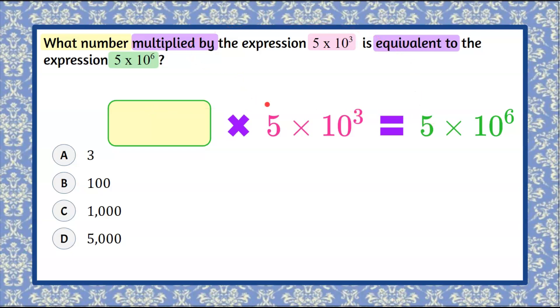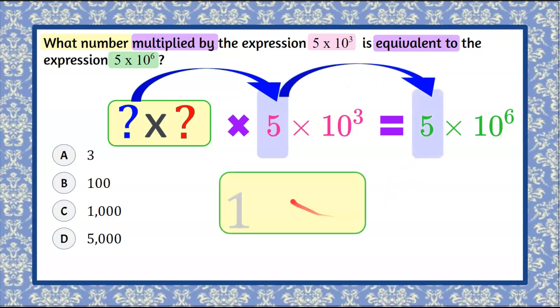Now when we're multiplying in scientific notation, we're going to consider the factors independent of the powers. So looking at our factors, we want to know a factor times a power of 10, and we want to know what number multiplied by 5 is going to be equal to 5. Well, that's 1. Any number multiplied by 1 is itself.